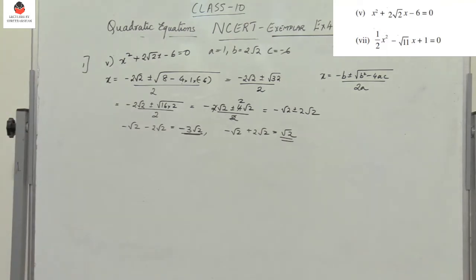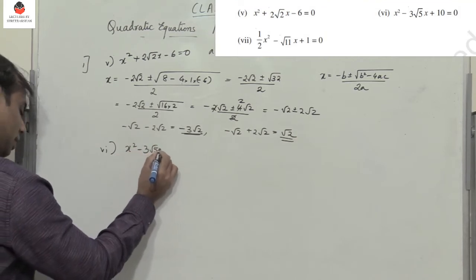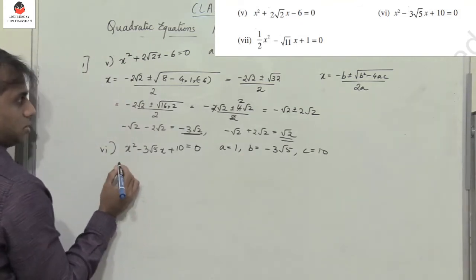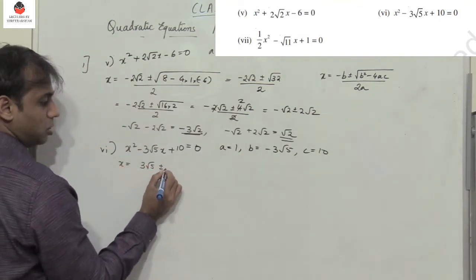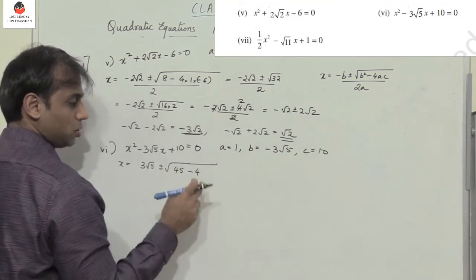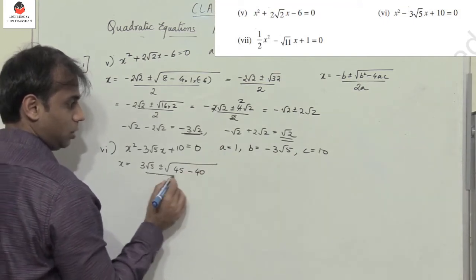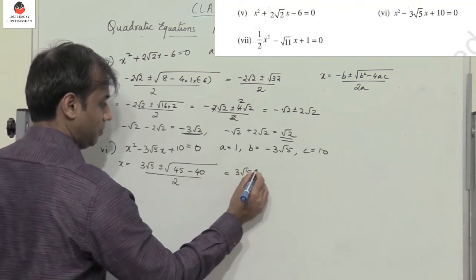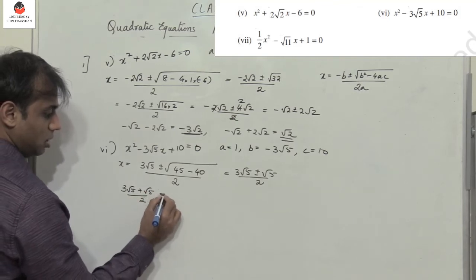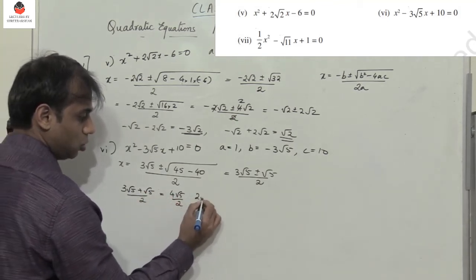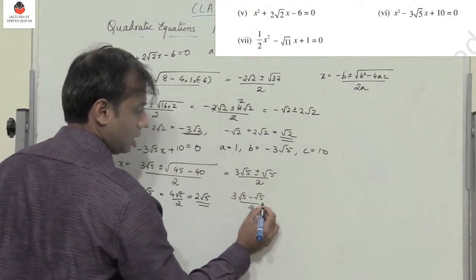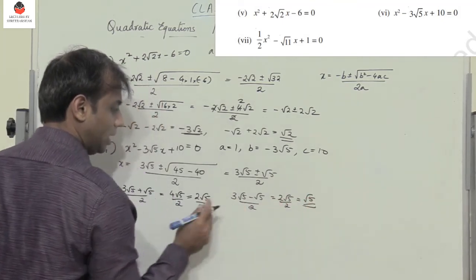Sixth equation: x² minus 3√5 x plus 10 equals 0, so a equals 1, b equals minus 3√5, c equals 10. Using the formula: x equals 3√5 plus or minus root of b² — 9 into 5 is 45 — minus 4 into 10 which is 40, divided by 2. That gives 3√5 plus or minus root 5 by 2. First value: 3√5 plus √5 by 2 equals 4√5 by 2 equals 2√5. Second value: 3√5 minus √5 by 2 equals 2√5 by 2 equals √5. The two roots are 2√5 and √5.